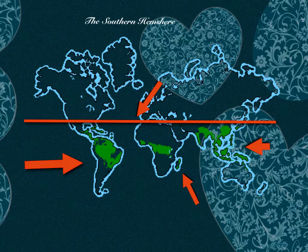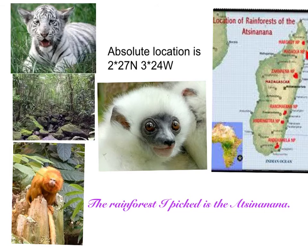All the rainforests are usually in the southern hemisphere. The rainforest I picked is the Anastanene. Absolute location is 2 degrees 27 north, 3 degrees 24 west.